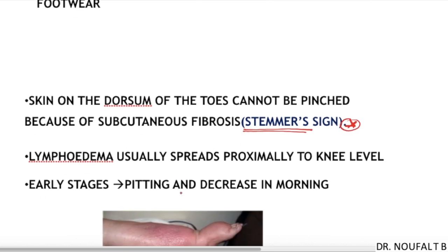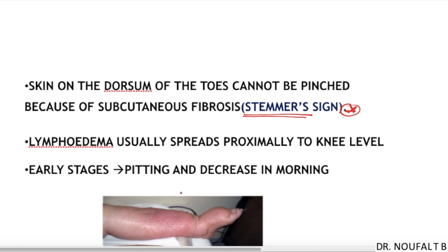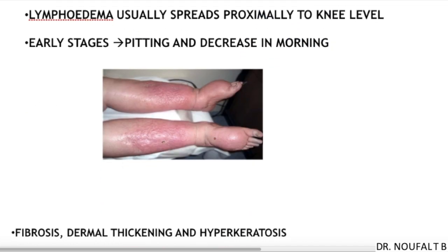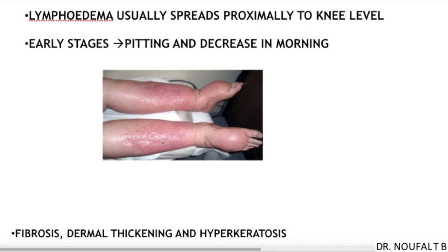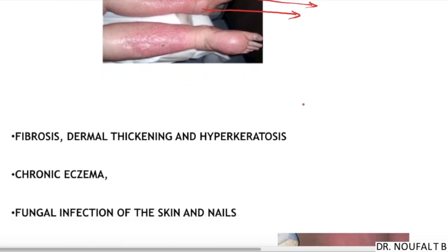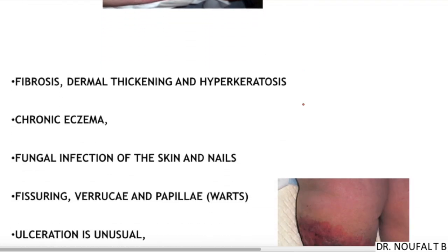Lymphedema usually spreads proximally to the knee level, and in early stages it will be pitting and the edema will decrease in the morning hours. In this picture you can see loss of contour of the ankle (tree trunk pattern), buffalo humping on the dorsum of the foot, and square toes due to confinement of the footwear.